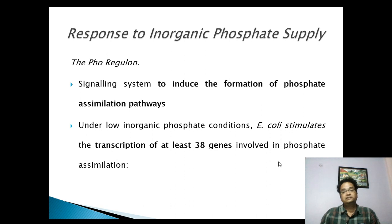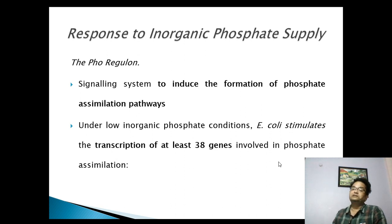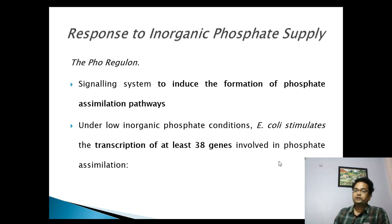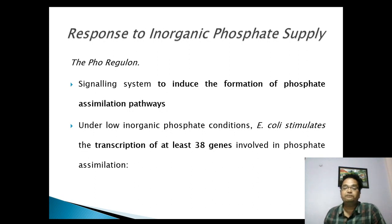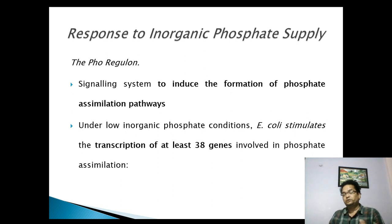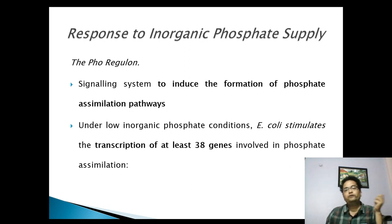It involves a signaling system to induce the formation of the phosphate assimilation pathway. When the concentration of inorganic phosphate is low, E. coli stimulates the transcription of at least 38 genes involved in phosphate assimilation. These genes code for proteins involved in the uptake of inorganic phosphate at different levels.